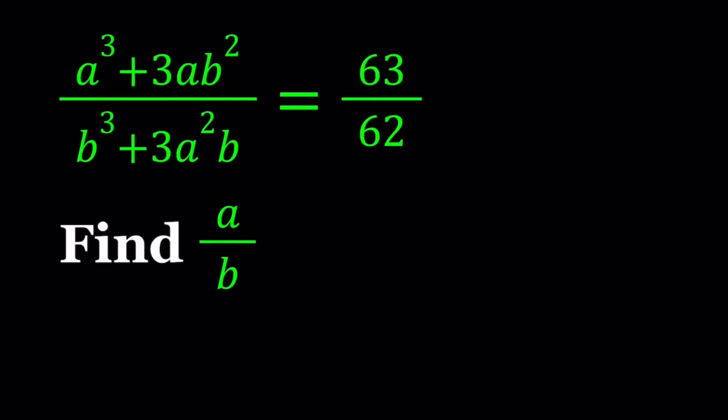Hello everyone. In this video, we're going to be looking at a proportion problem. We have a cubed plus 3ab squared divided by b cubed plus 3a squared b equals 63 over 62. And we're going to be finding the ratio a over b. I'll be presenting two methods.